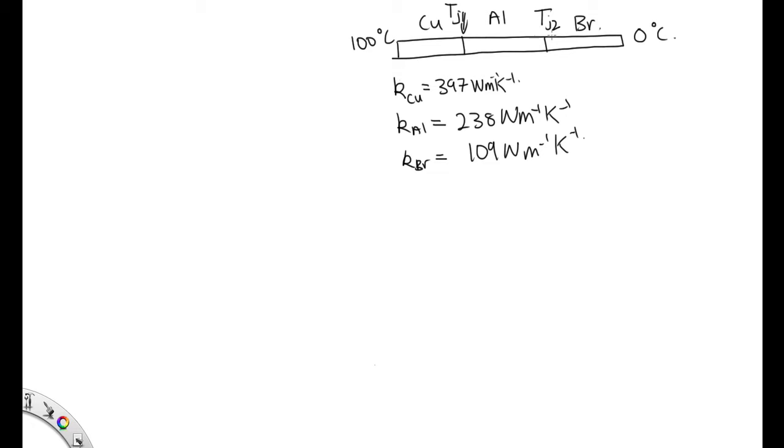Now what we know is that this reaches a steady state, which means that we must have the same amount of heat flow through this part as through this part and through this part. If this wasn't so, we'd have a buildup of energy at one place and we would not reach a steady state.